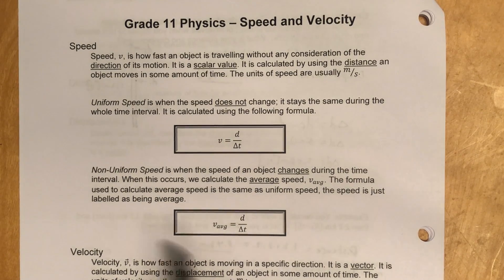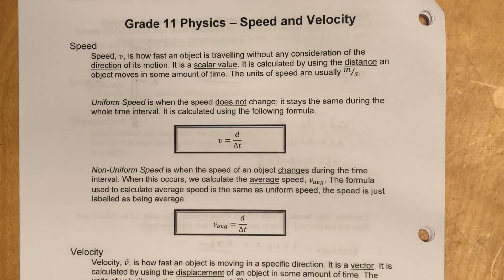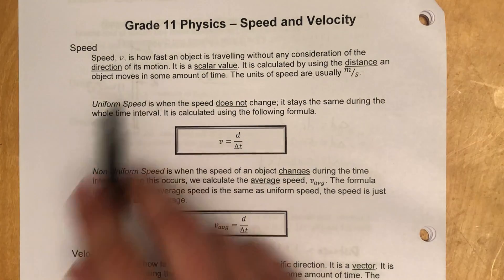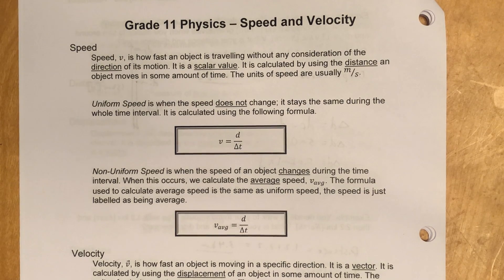Speed refers to how fast an object is traveling without any consideration to the direction of its motion, therefore being a scalar value. It is calculated by using the distance an object moves in a specific amount of time. The units normally used in physics are meters per second.